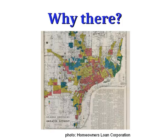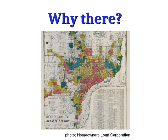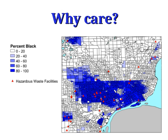Then we can ask, why there? Why is it that this neighborhood would be mostly Black and this neighborhood would be mostly white? There are a whole variety of causes for this residential segregation within cities — one major one is a history of housing discrimination. What you see on the screen right now is a map created by the Homeowners Loan Corporation in the early 20th century that defined what parts of the city they would allow Black prospective homebuyers to purchase in and what areas they would reserve only for white homebuyers.